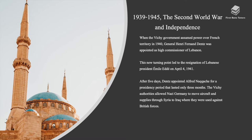When the Vichy government assumed power over French territory in 1940, General Henry Fernand Dauntz was appointed as High Commissioner of Lebanon. This new turning point led to the resignation of Lebanese President Emil Ede on April 4th, 1941. After five days, Dauntz appointed Alfred Nakash for a presidency period that lasted only three months. The Vichy authorities allowed Nazi Germany to move aircraft and supplies through Syria to Iraq, where they were used against British forces.